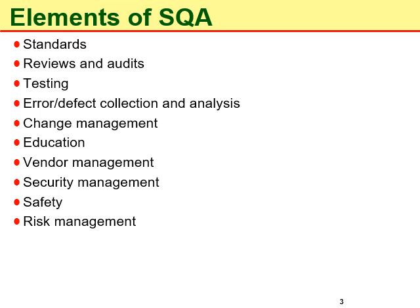The last element is risk management. This deals with identifying risks of several types that could be faced during project development. These can include technological risks, financial risks, and political and human resource related risks. After these risks are identified, plans regarding the mitigation of these risks have to be developed. That's all about our discussion of the elements of software quality assurance.